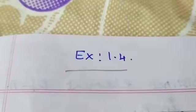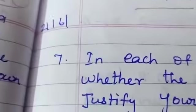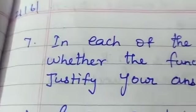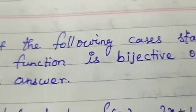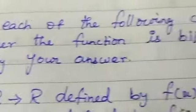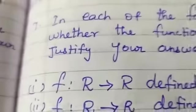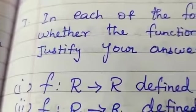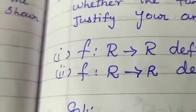In exercise 1.4, we have already completed 6 questions. Now let me move to the 7th one. In each of the following cases, we have to state whether the function is bijective or not, and we have to justify our answer.